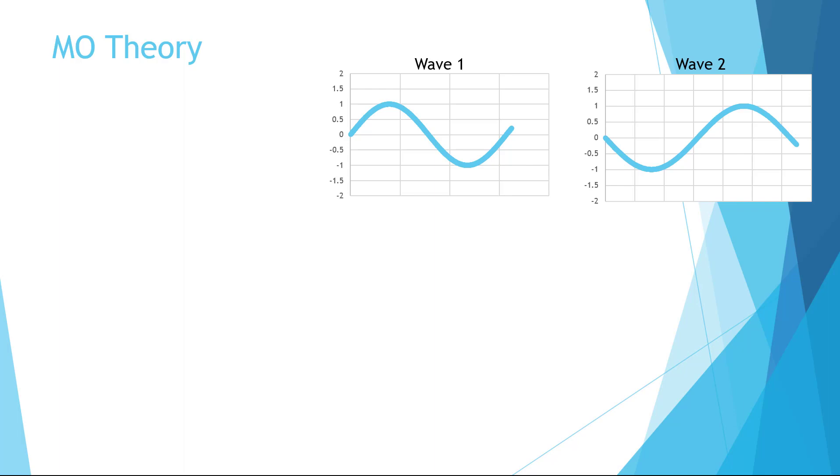Remember back to our earlier discussion, electrons have properties of both waves and particles. Because of their wave-like properties, they have interference patterns. So let's remember how wave interference works in a bit more detail before moving on to the details of MO diagrams.